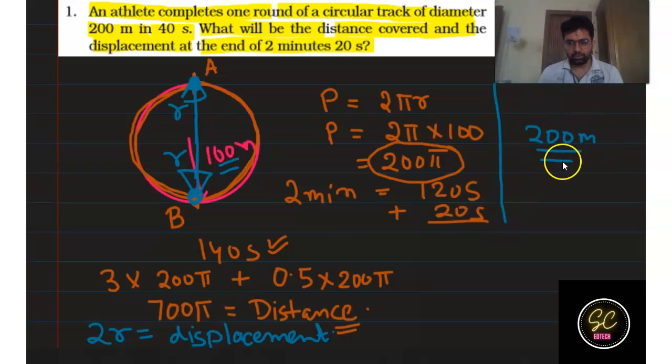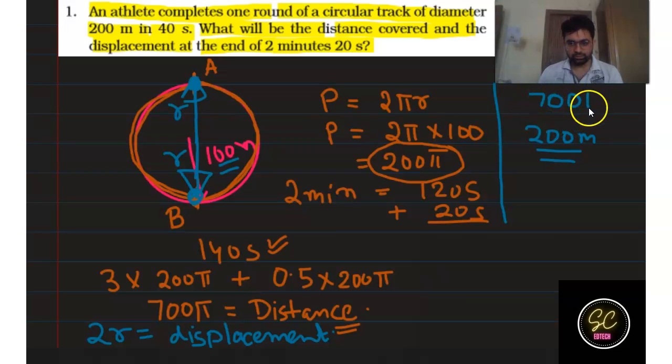So the final answers are: displacement will be 200 meters, and total distance covered will be 700π meters (approximately 2200 meters).